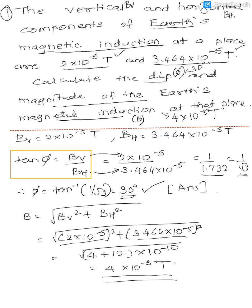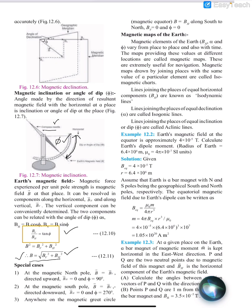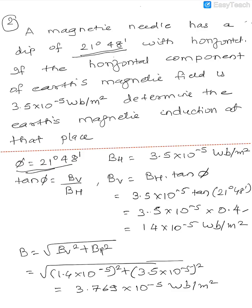The second problem: We have a dip directly. A magnetic needle is having a dip with the horizontal. So that is given. And we have a horizontal component, we have Bh of the magnetic field. We have to determine the magnetic induction at that place.